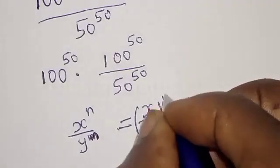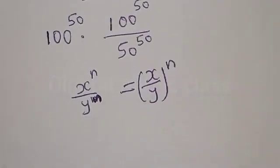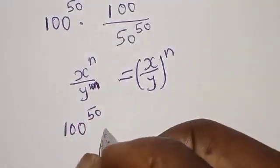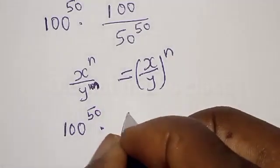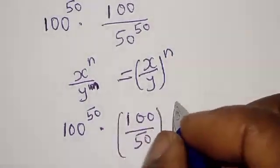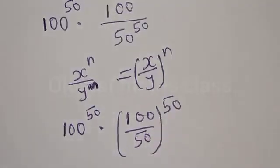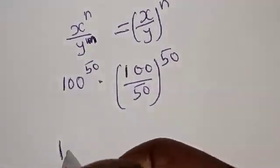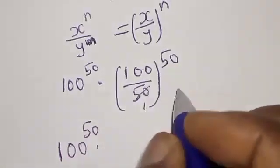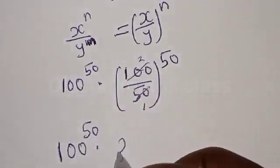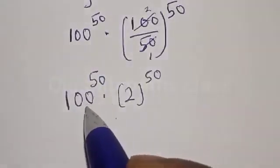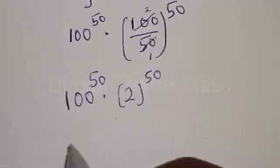Then we have 100 raised to power 50 multiplied by 100 divided by 50 raised to power 50. Now we have 100 raised to power 50 and 100 divided by 50 raised to power 50, which gives us 2 raised to power 50. Here we have different bases for the same exponent, or the same power.